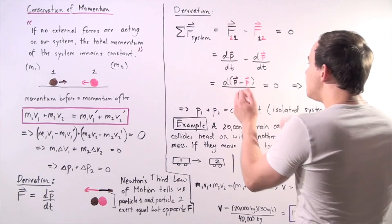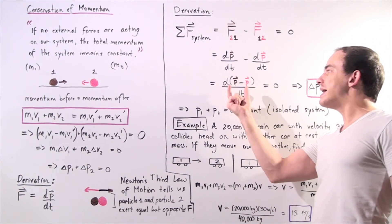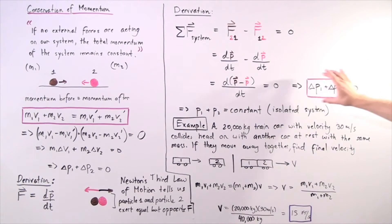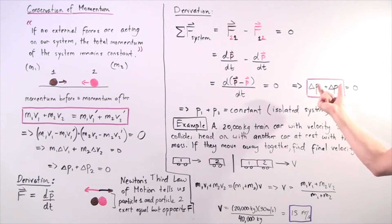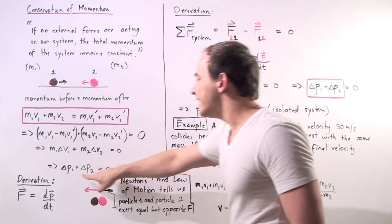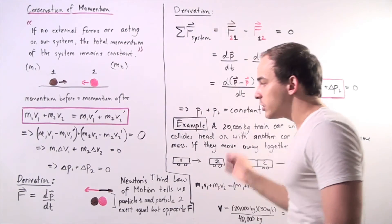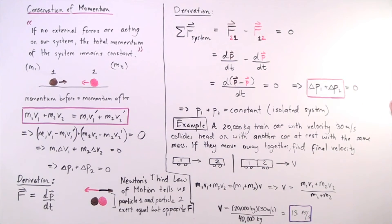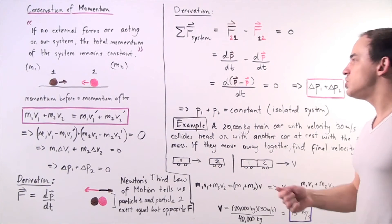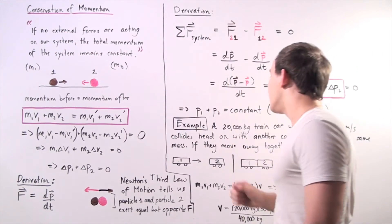Combining these derivatives, we get the change in momentum of object one minus the change in momentum of object two equals zero. This implies that the change in momentum of object one plus the change in momentum of object two equals zero — exactly identical to our earlier equation. Therefore, we've derived the conservation of momentum law from Newton's second law. This means P1 plus P2 equals a constant, as long as we have an isolated system with no external forces acting on our objects.